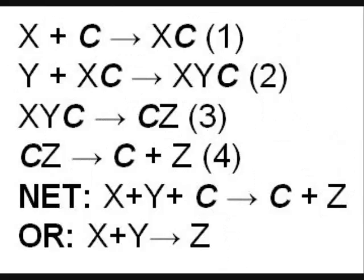A typical catalyzed reaction proceeds as follows. Say that in the overall reaction, X and Y react to form Z, with C as a catalyst. C reacts with X to form XC. Y then reacts with XC to form XYC. X and Y react, so XYC becomes CZ, which decomposes to C and Z. Since C is not produced or consumed, it is left out of the overall reaction.